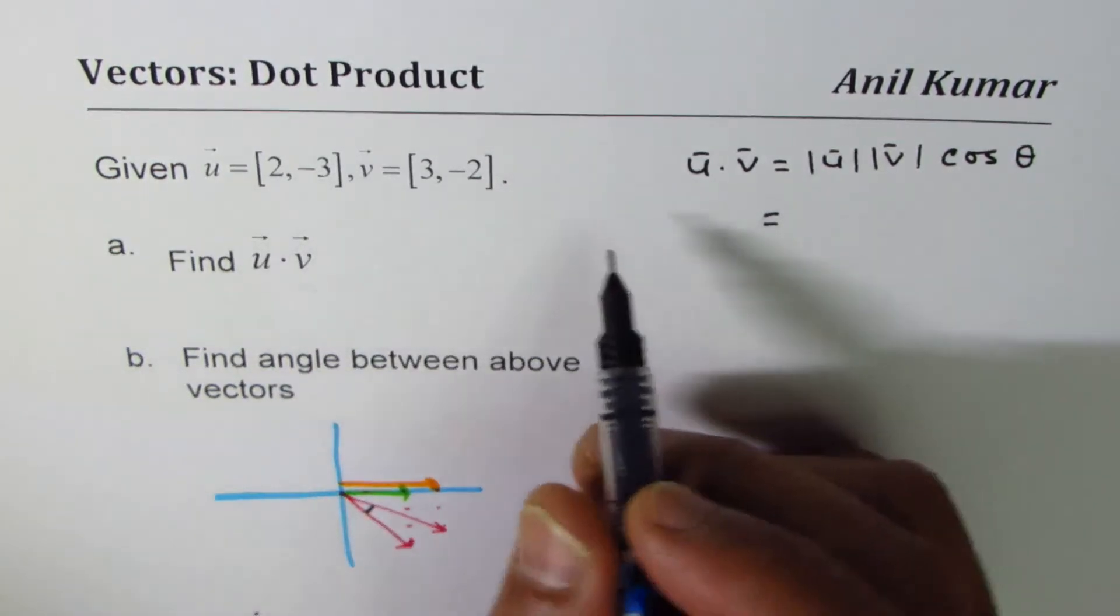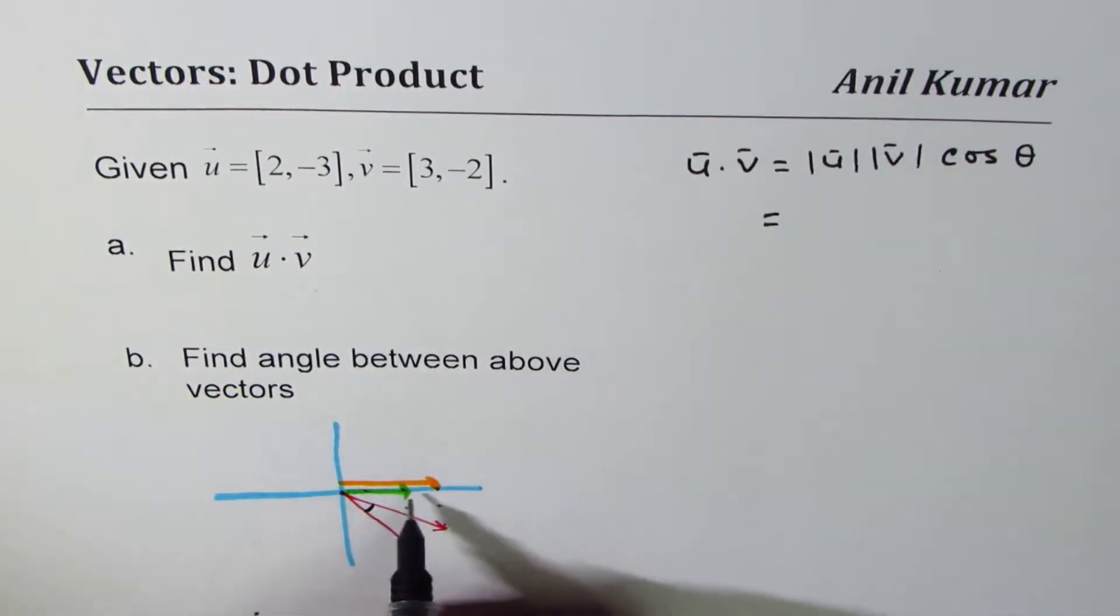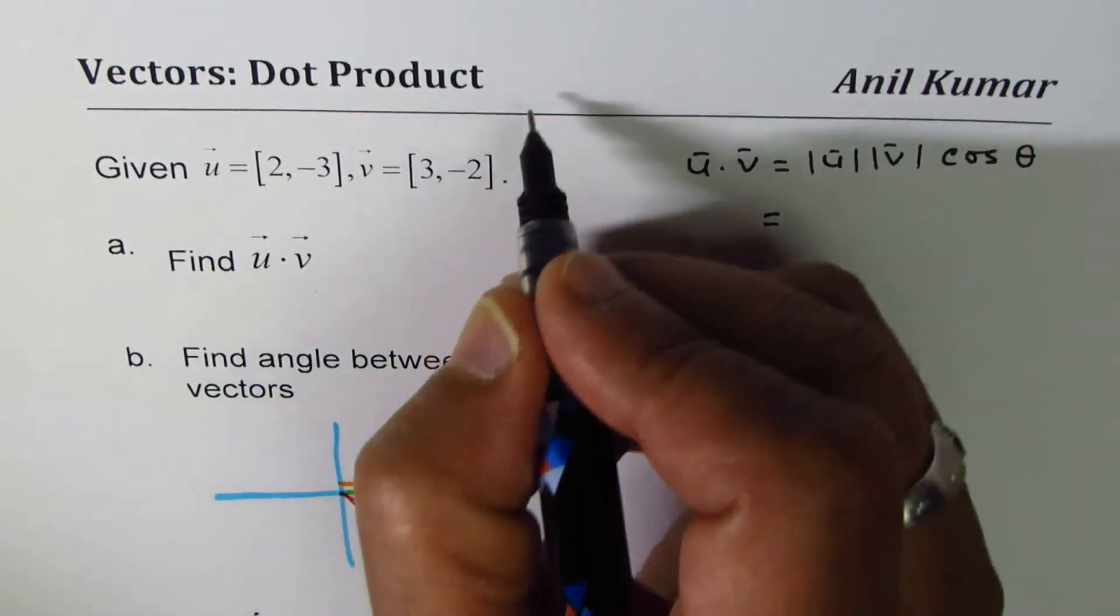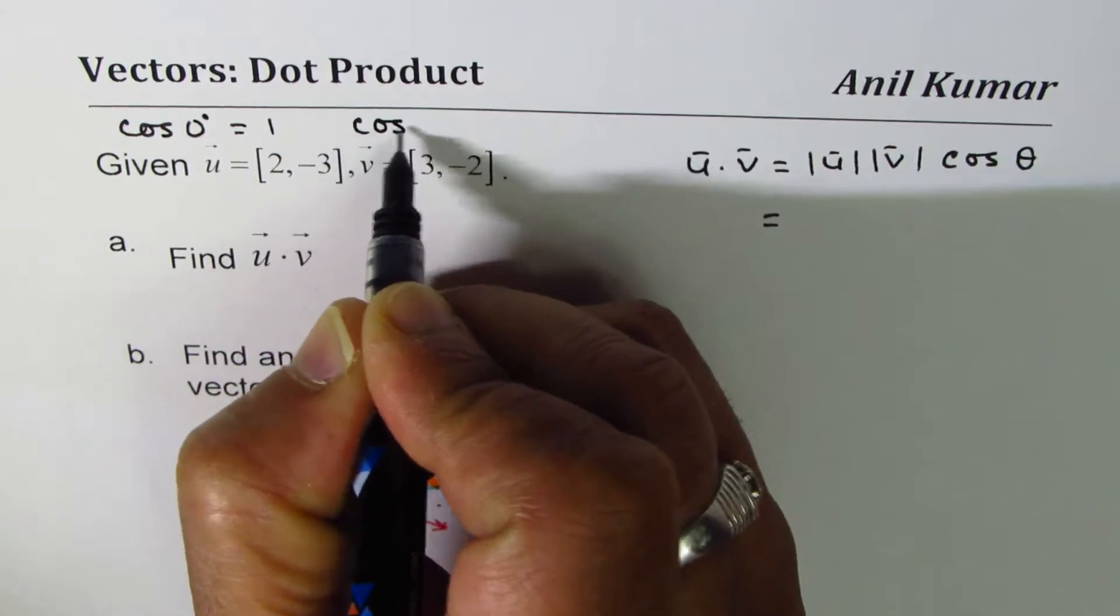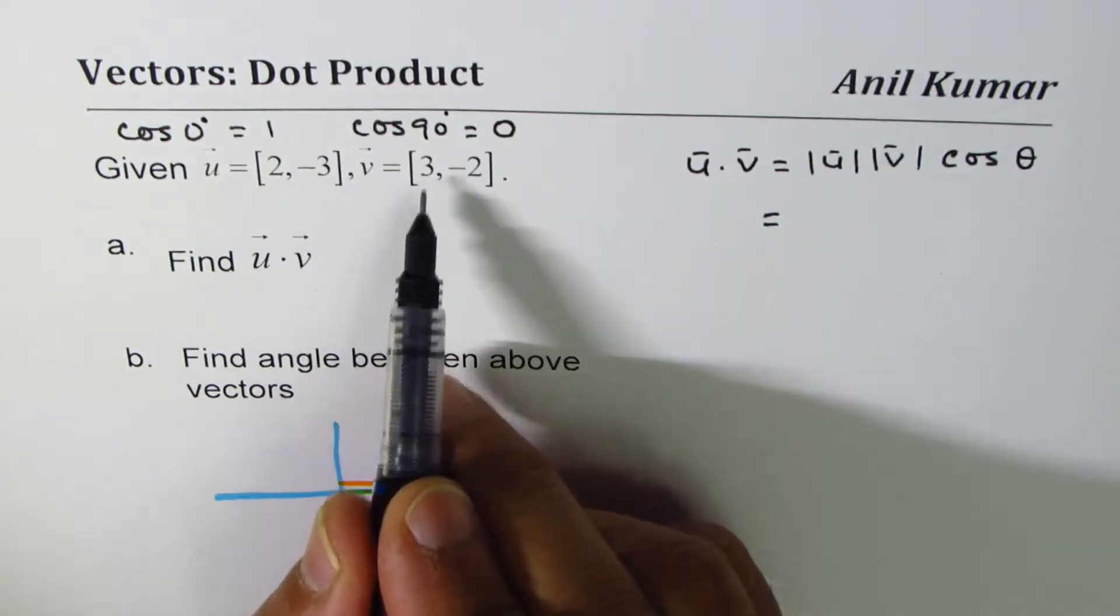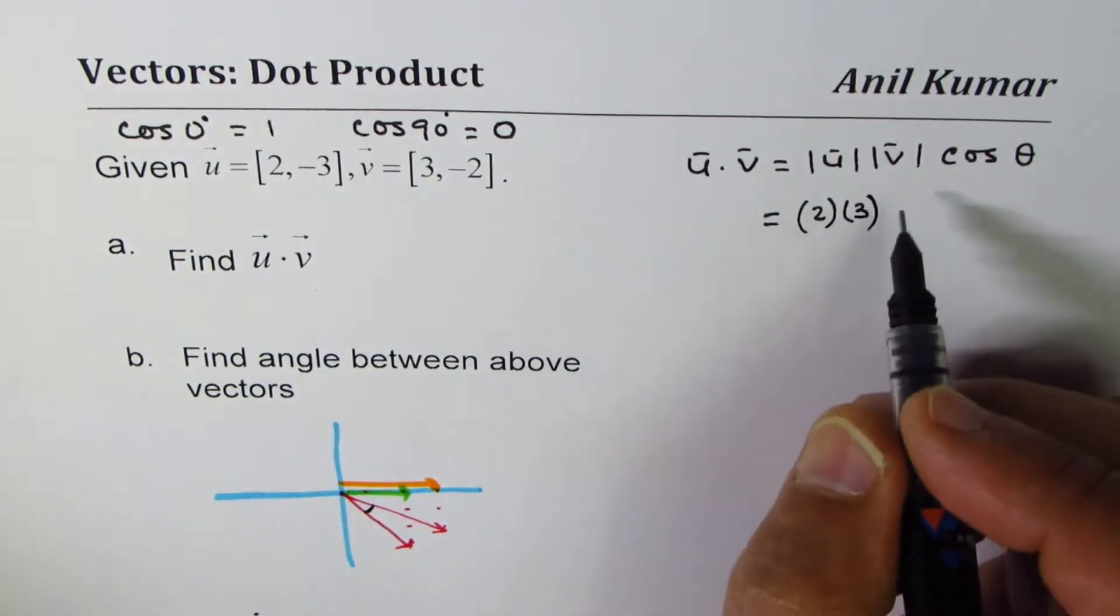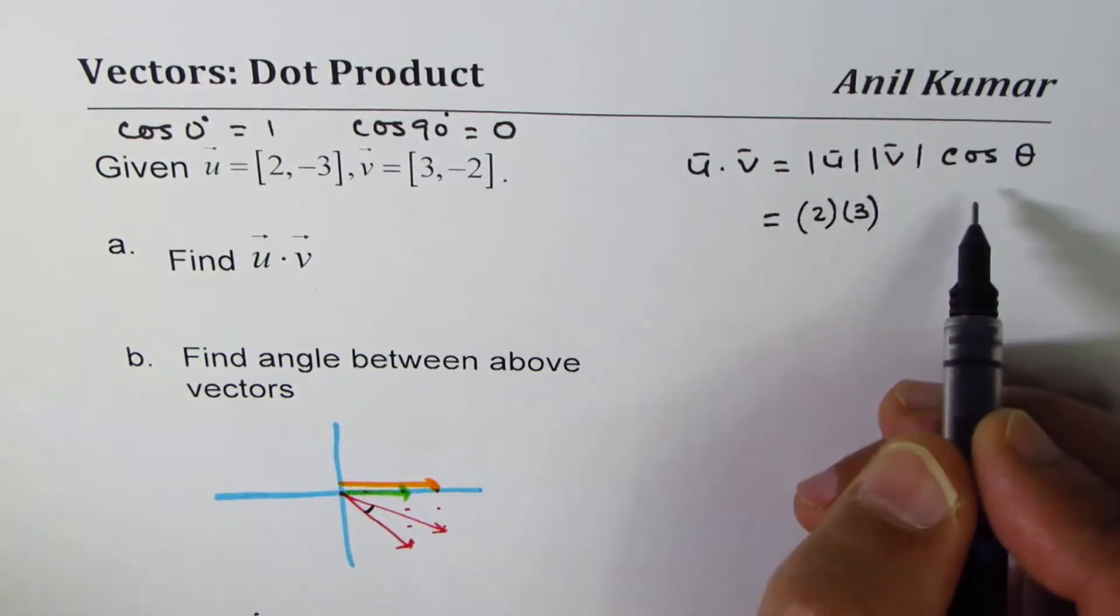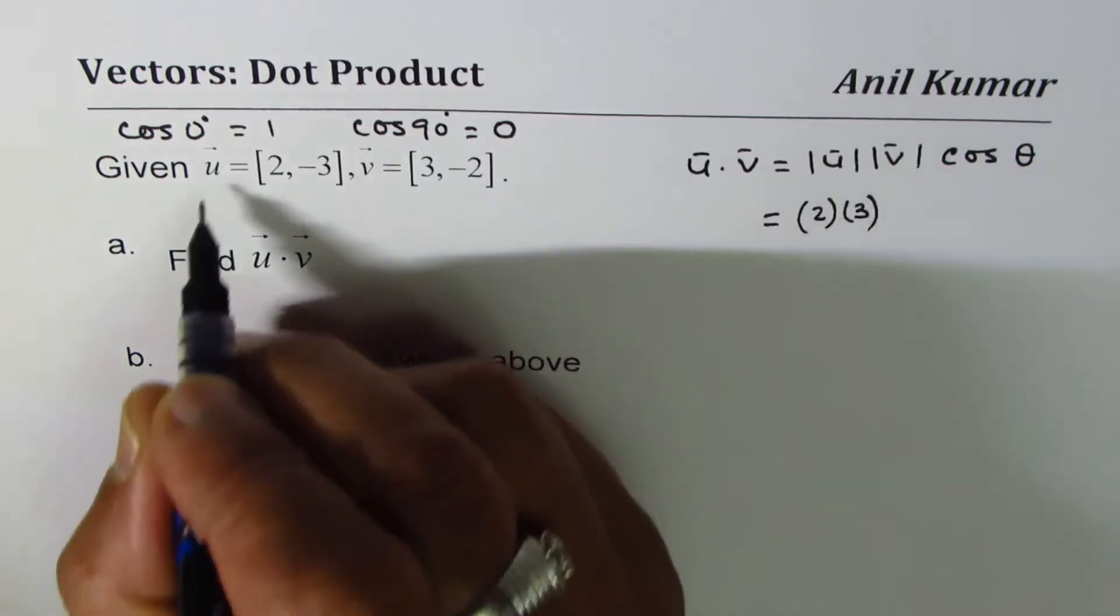So when you do that, you would also use 2 times 3 cos theta which is zero. So I'm purposely doing a longer method to show you why it is as simple as writing 6. This angle is zero, so cos of zero is one. Remember that: cos of 0 degrees is 1 and cos of 90 degrees is 0.